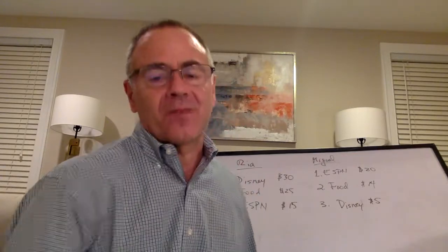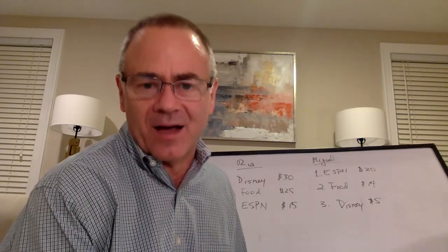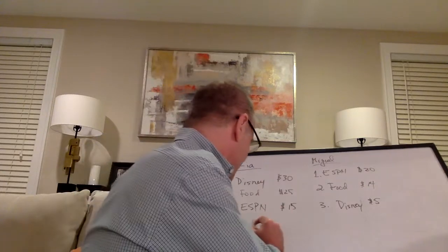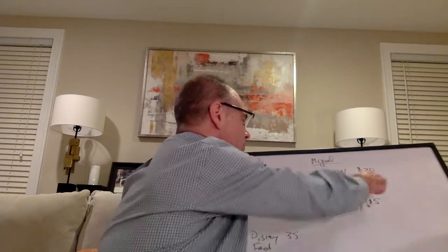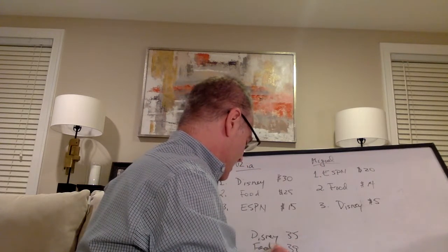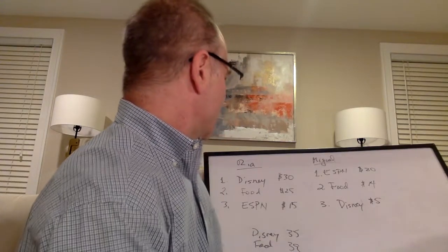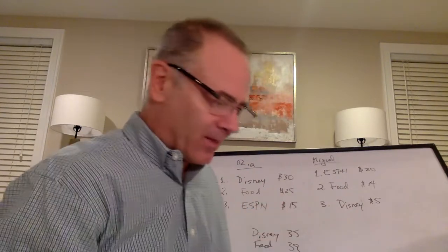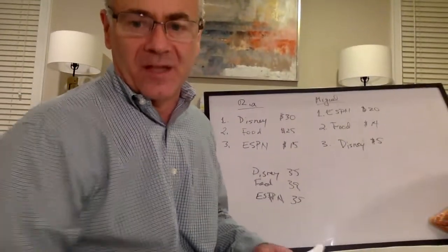But notice: what is the efficient outcome? If you want to maximize the sum of their benefits, consider each channel. Disney: $30 + $5 = $35. Food Network: $25 + $14 = $39. ESPN: $20 + $15 = $35. The Food Network brings more total benefits than the other two — that's the key.